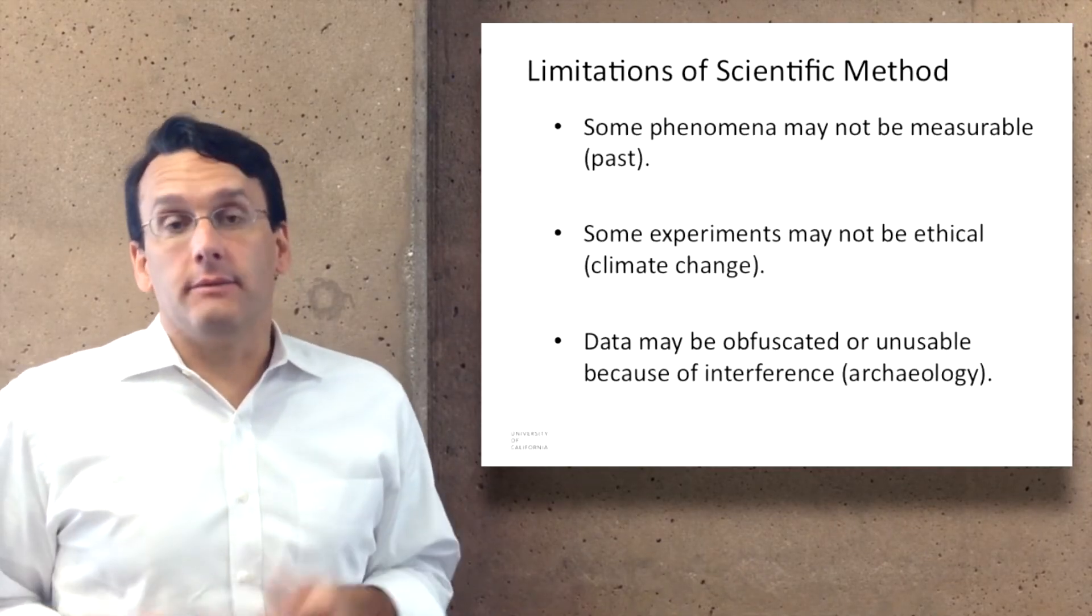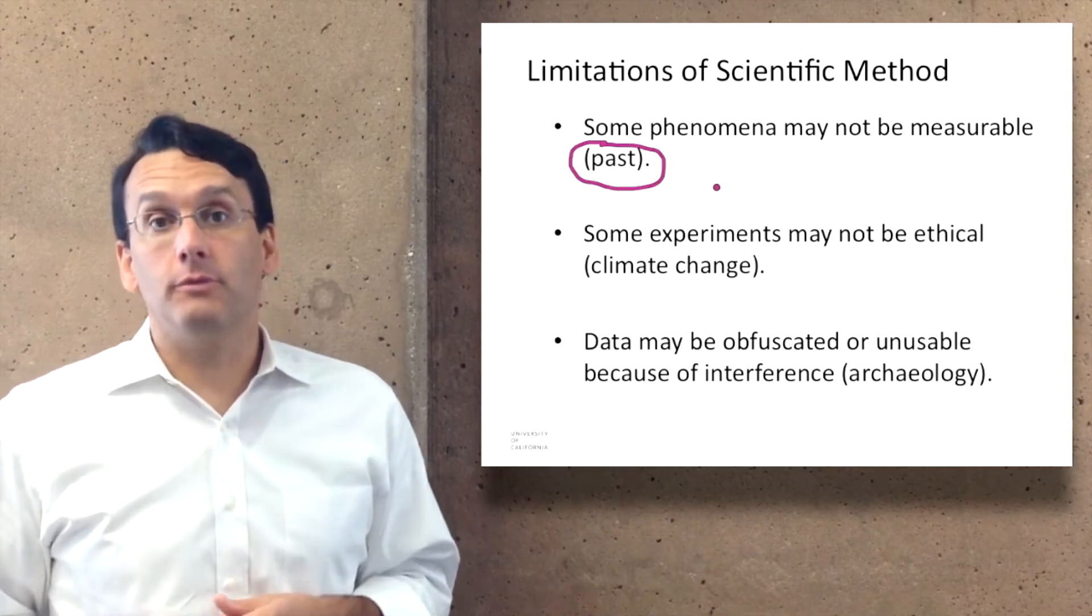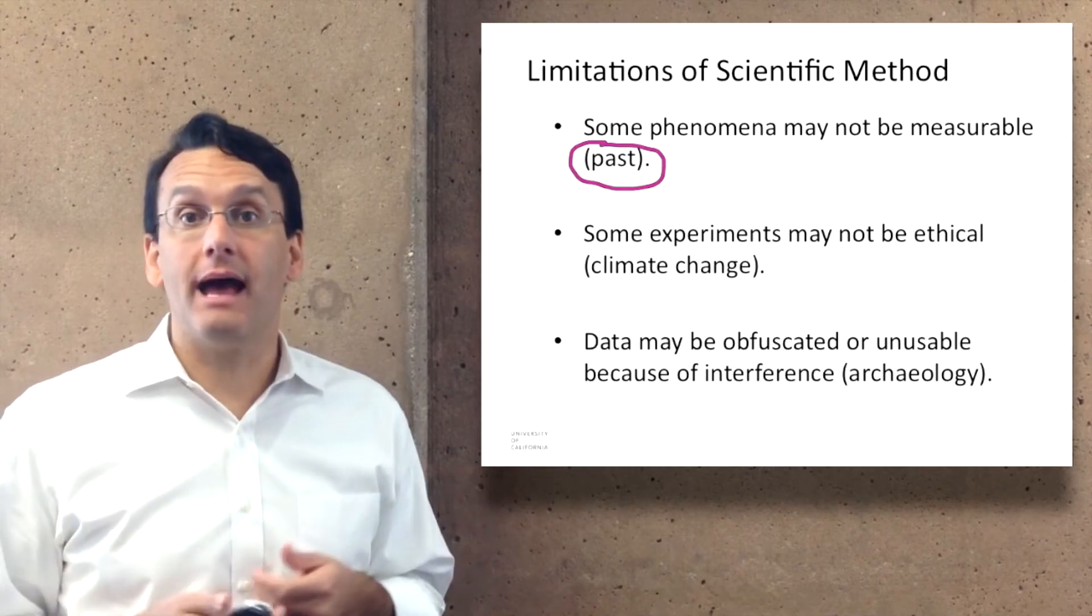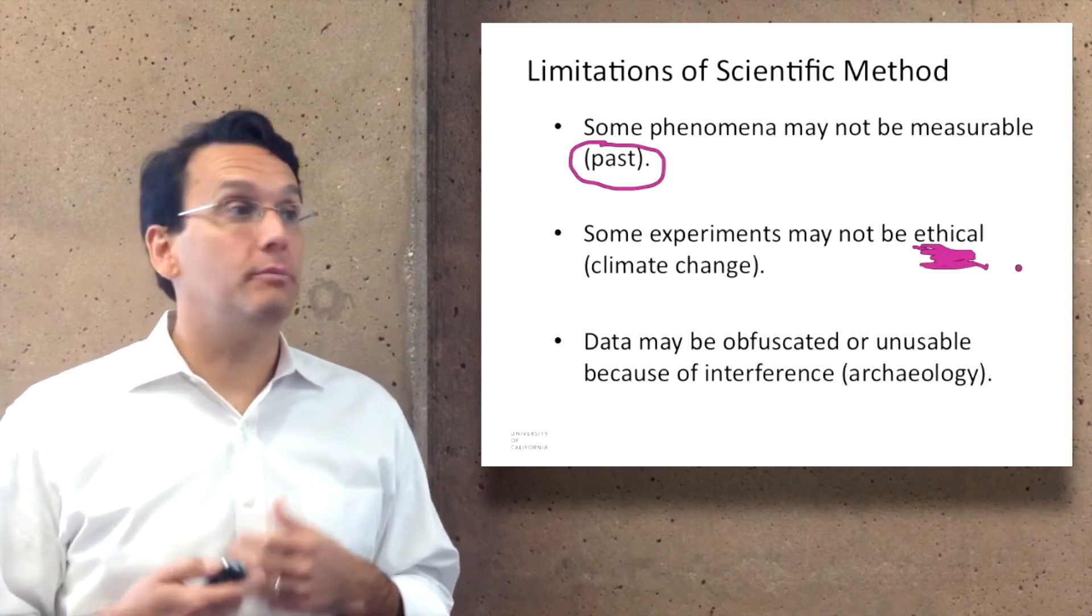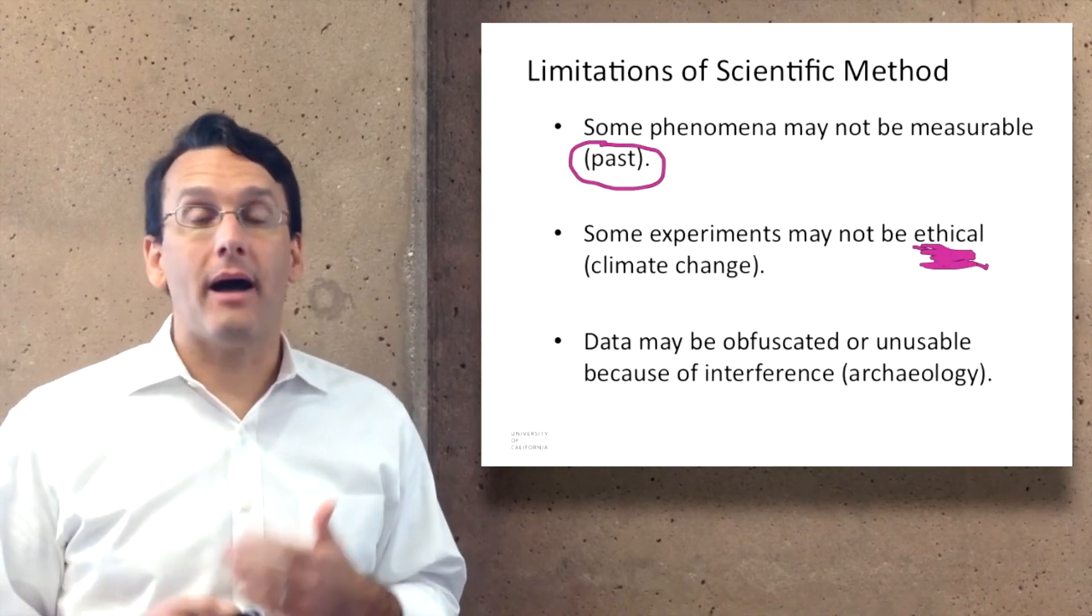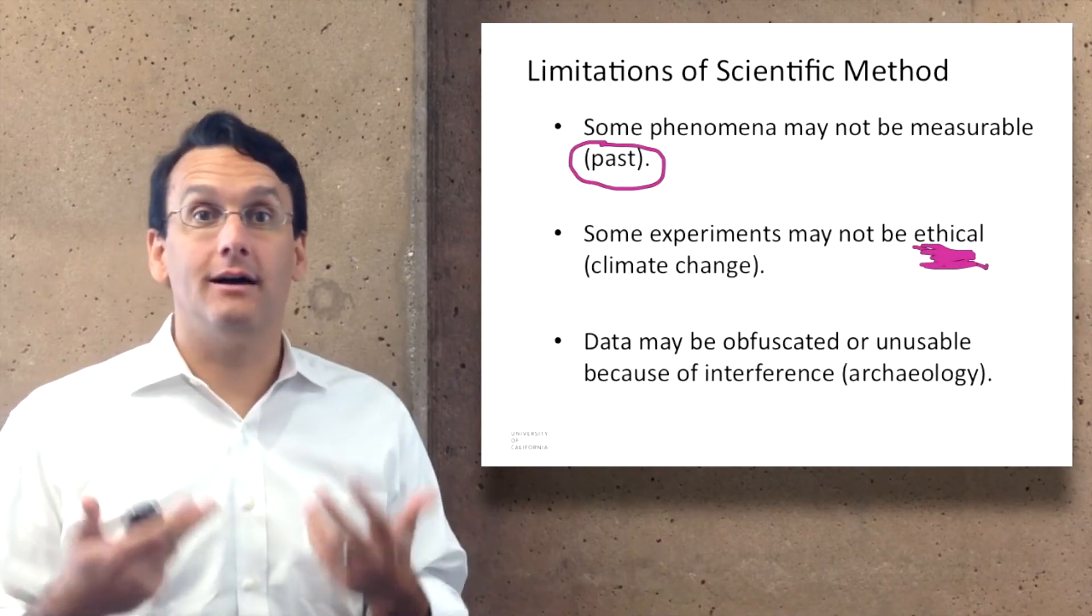There are a variety of different limitations on the scientific method. Some phenomena may not be measurable. Something that happened in the distant past, you can't measure it. Other experiments may not be ethical. You could potentially do a study about climate change, but if it works out that what you've done is make the world worse, that's a problem.